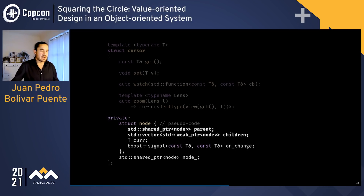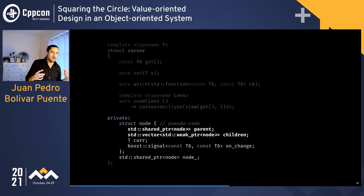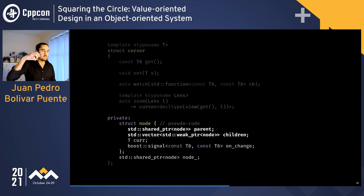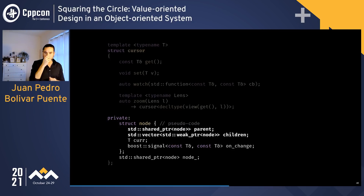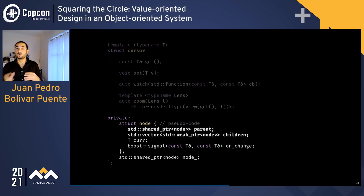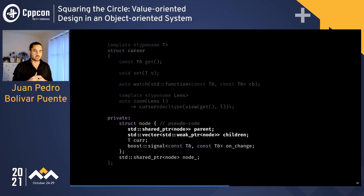To implement derived cursors is a bit more complicated. Instead of having just one central object, we have the central object plus an inverted tree — where leaves point to their parents — that caches parts of the data model. This allows us to observe only the parts of the data structure we're interested in and track changes to localize parts of the data model.